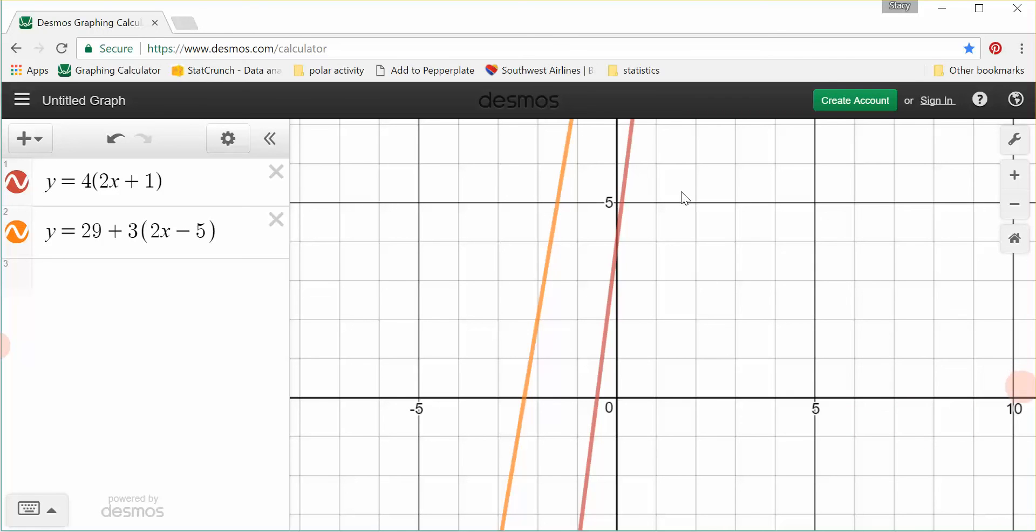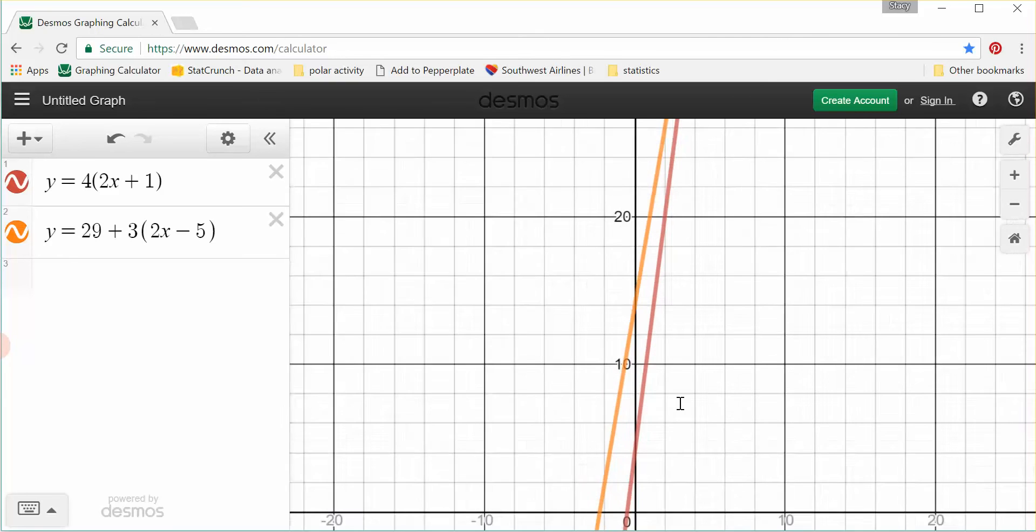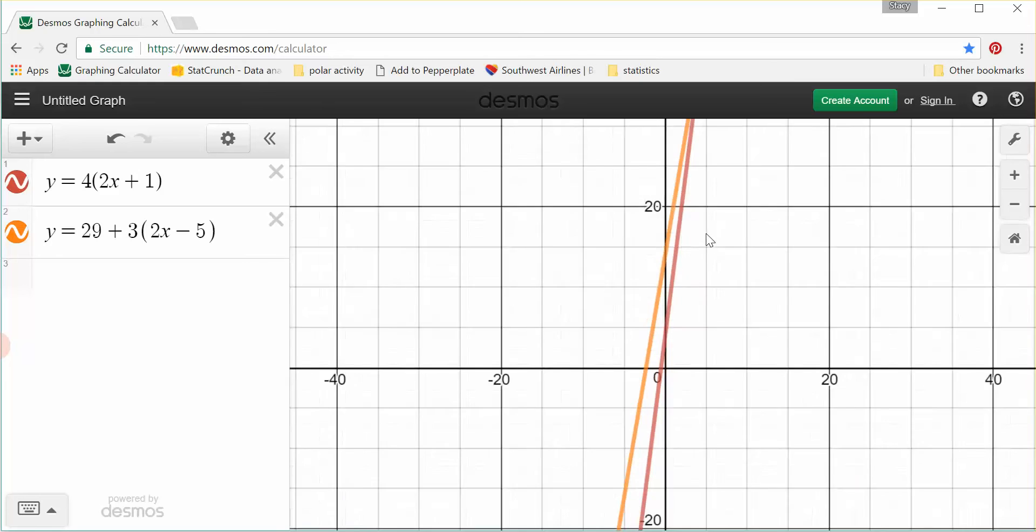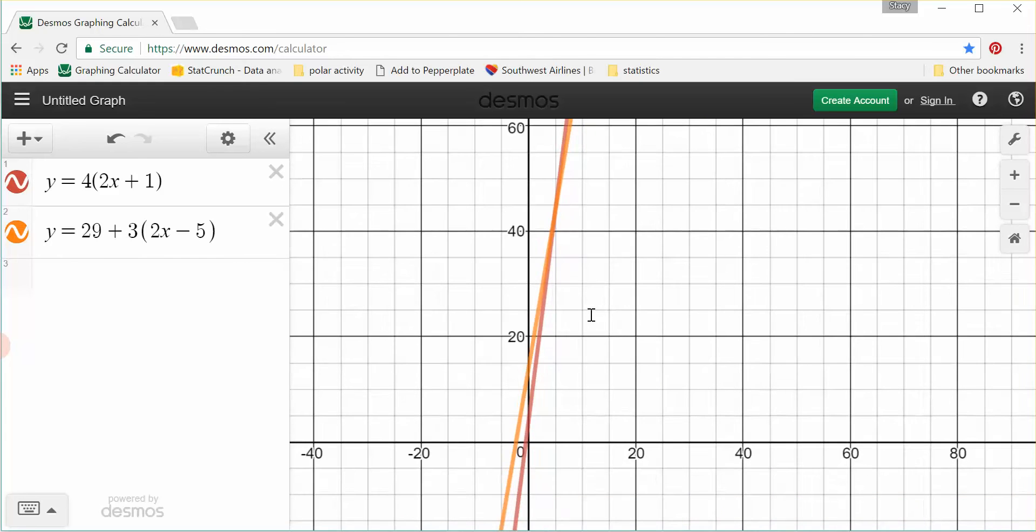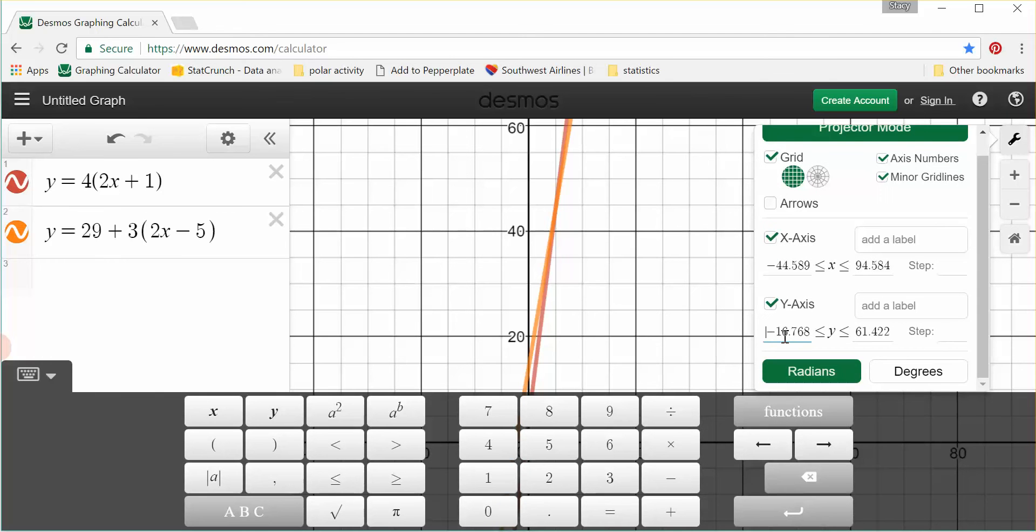So instead of adjusting the window on my graphing calculator, I'm simply going to roll, and I'm scrolling using my mouse over here in my hand, and I can adjust, and I can see that, sure enough, these two lines do intersect. I can't quite tell because the scale on this isn't great right now, and that's a really easy fix. So I'm going to go up here, and I'm going to adjust the settings, and I'm going to change the y-axis again to be between,